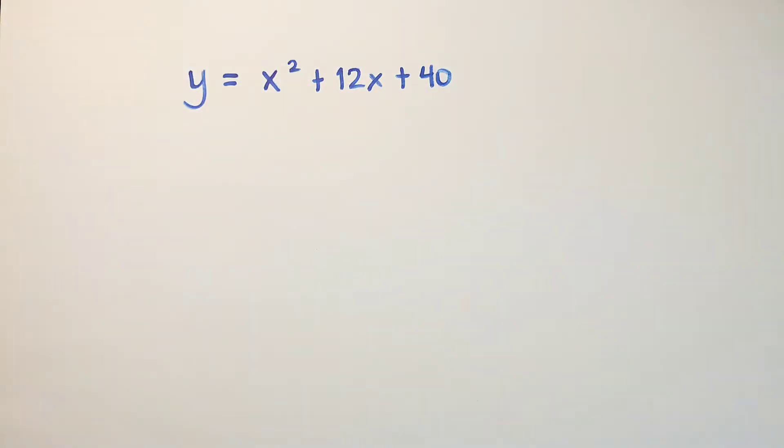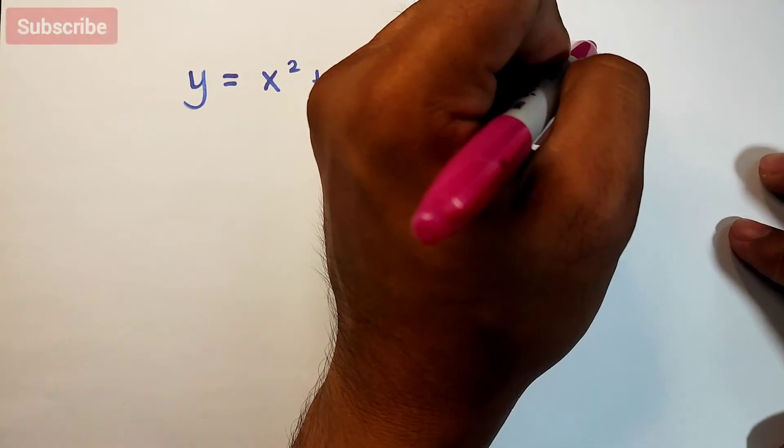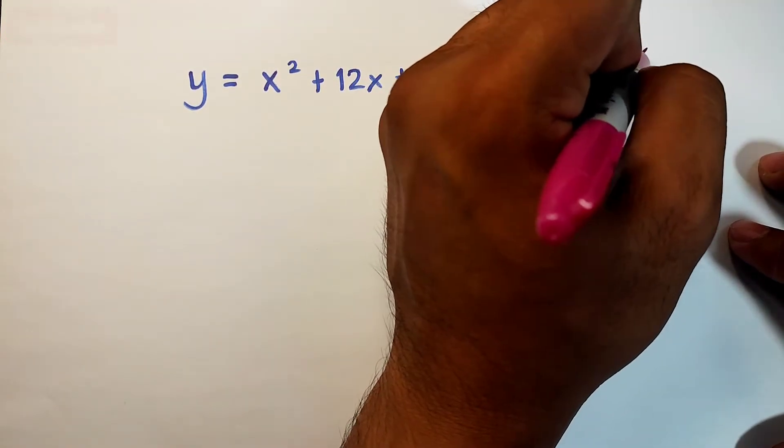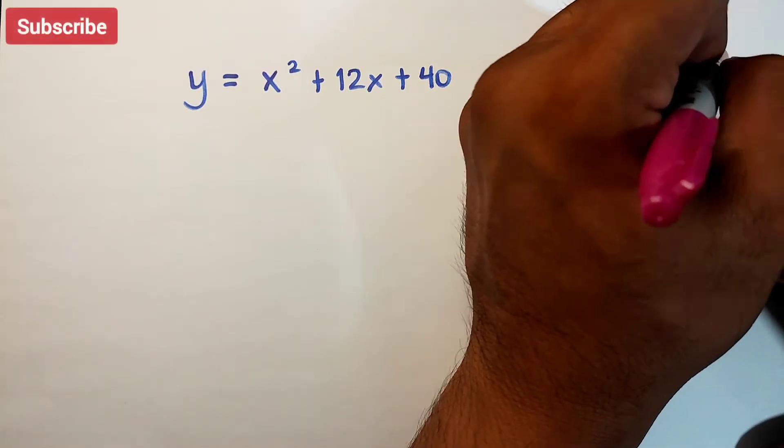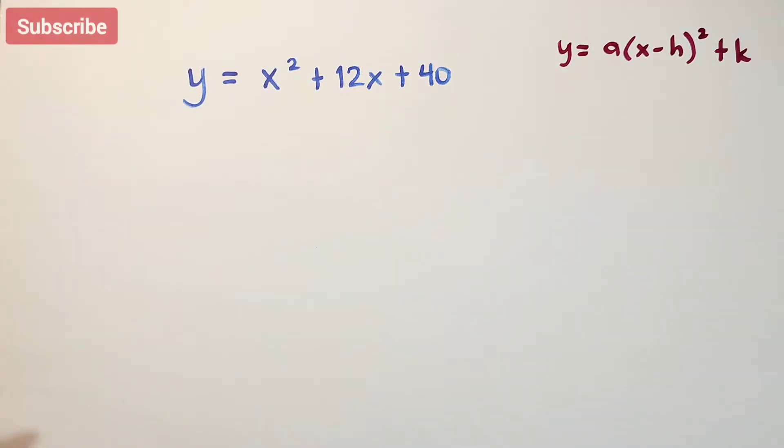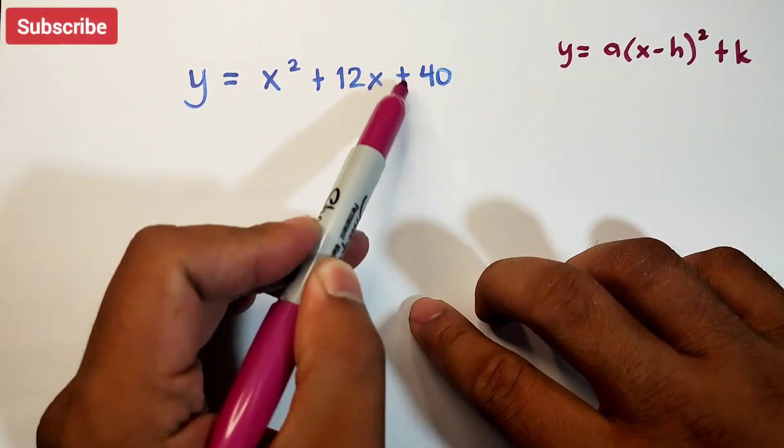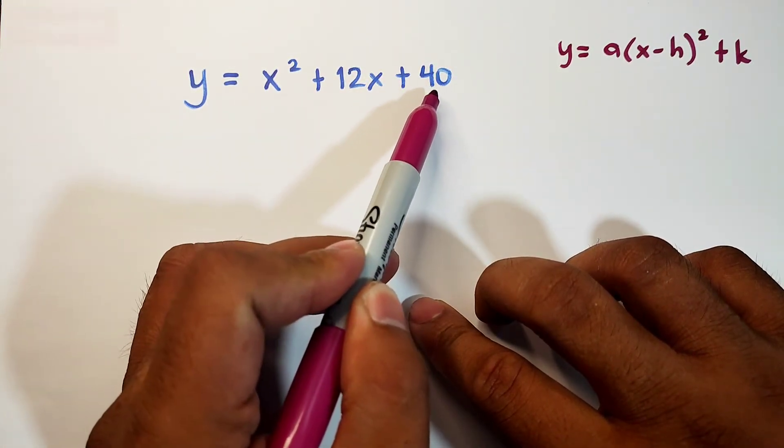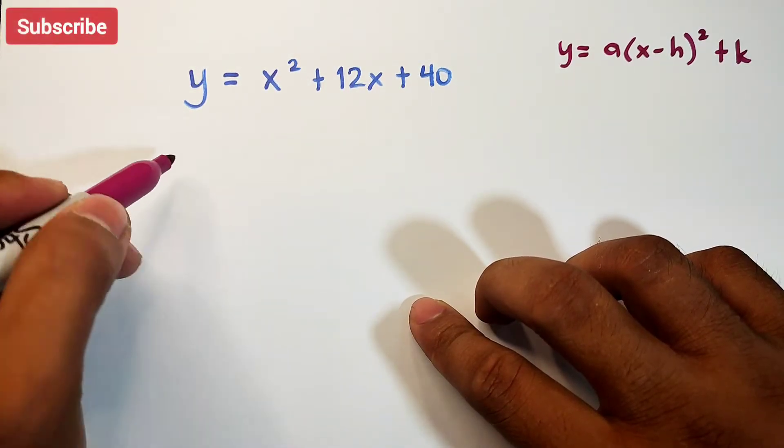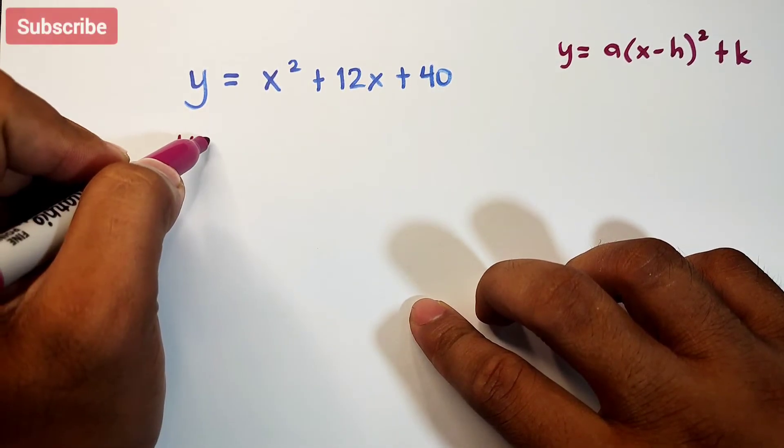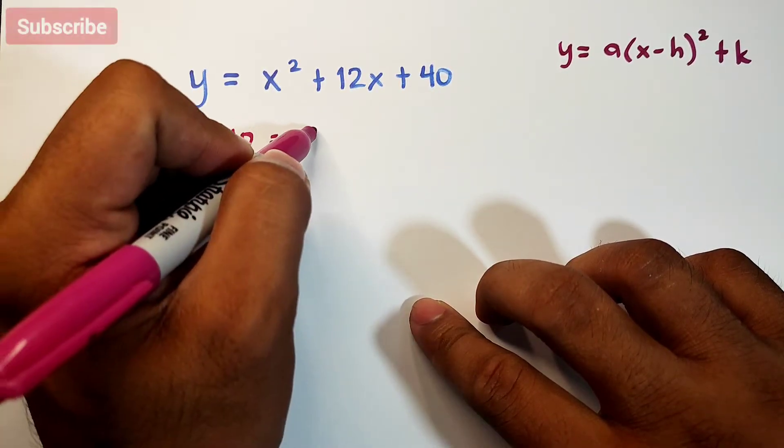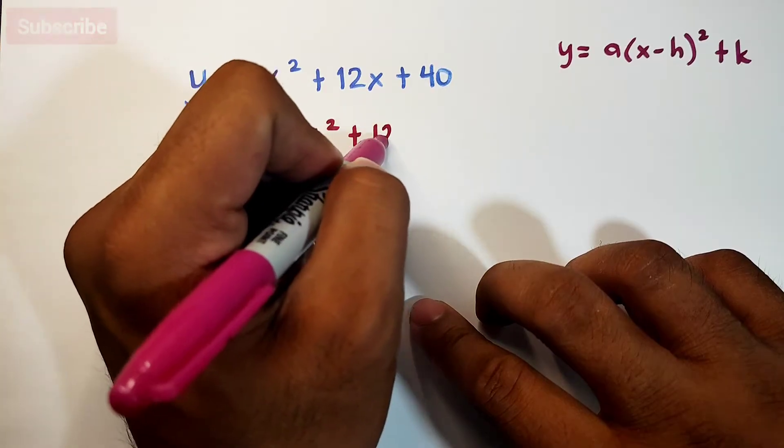I have two different examples for tonight's video. Our target is to transform this into the form y equals a times x minus h squared plus k. We will perform completing the square. First, we need to transpose the constant 40 to the other side of the equation. It will become y minus 40 equals x squared plus 12x.